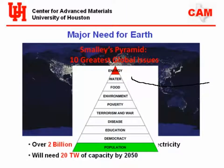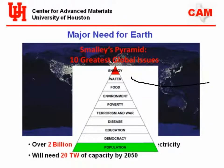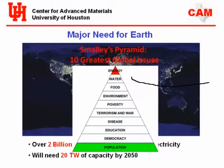We've got about 10 to 12 terawatts currently of electrical generating power — that's 10,000 gigawatts of electrical power capacity in the world. Texas has the largest installation of wind turbines in the U.S. — we've got about 6 gigawatts of wind turbines. So there's a long way to go in terms of the rest of the world.